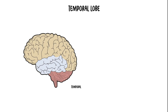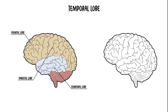The temporal lobe lies underneath the temporal bone, inferior to the frontal and parietal lobes. This lobe contains the primary auditory cortex and Wernicke's area. The cortical association areas of the temporal lobe are responsible for retention of visual memory and language comprehension.